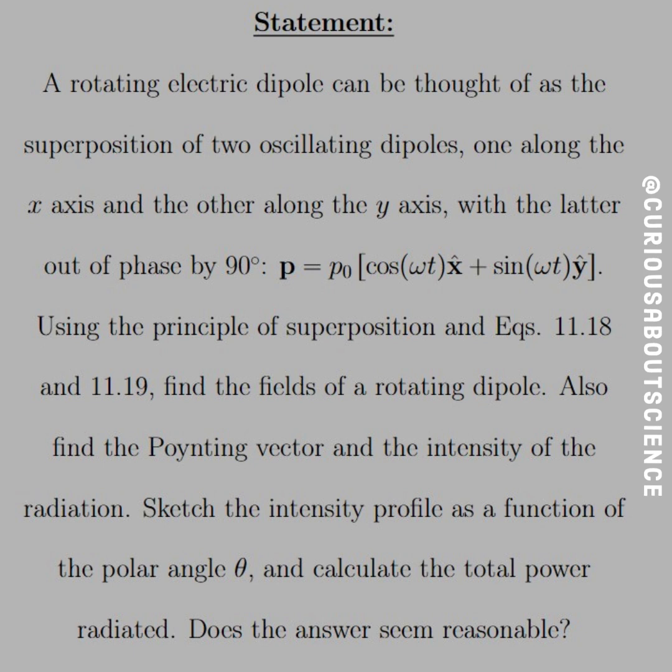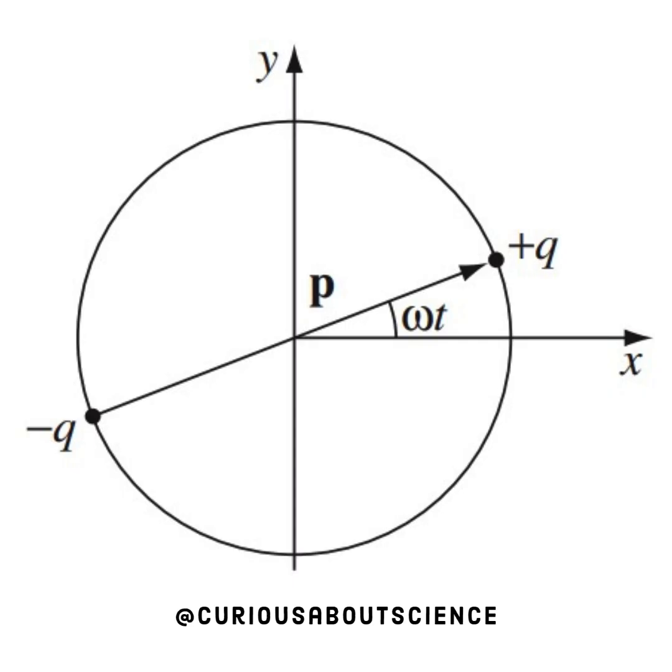So a rotating electric dipole can be thought of as a superposition of two oscillating dipoles. One along the x-axis and the other along the y-axis, with the latter out of phase by 90 degrees. Using the principle of superposition, equations 11.18 and 11.19, find the fields of a rotating dipole. Also find the Poynting vector and the intensity of the radiation. Sketch the intensity profile as a function of the polar angle theta, and calculate the total power radiated. Does this answer seem reasonable?